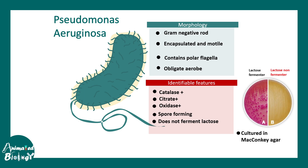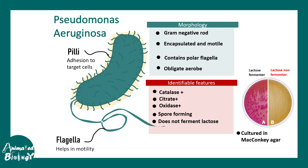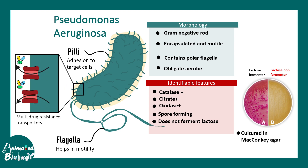It can also form spores but does not ferment lactose. On MacConkey agar, it gives rise to yellowish colonies, typical of lactose non-fermenters. It has pili which help it attach and adhere to target cell surfaces, and flagella which help it navigate through thick mucus layers to reach target cells. On its surface it also has multidrug resistance transporters which can pump out many antibiotics, making it a very difficult bacterial strain to treat.